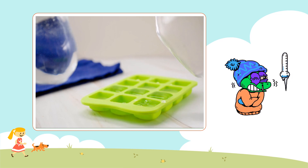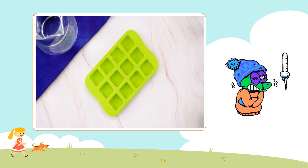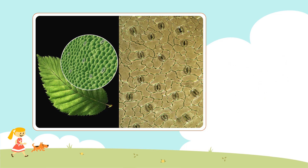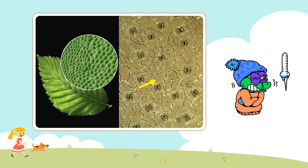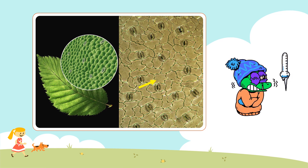Think about an ice cube tray that you put into your freezer. Each compartment is filled with water. If you could glimpse into a plant's leaves, you'd see a similar arrangement of square-shaped plant cells. Each cell has a rigid outer wall. The inside parts are filled with water and cell structures. When the temperature drops below freezing, just like the water in the ice cube tray, the water inside each cell freezes. This damages the cells of a plant.